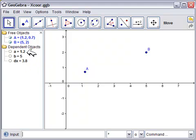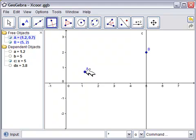So, it says the difference in the x coordinates is 3.8. Let's check that out using something else in GeoGebra. GeoGebra will draw a line through B, perpendicular to the x-axis, and a line through A, perpendicular to the y-axis.